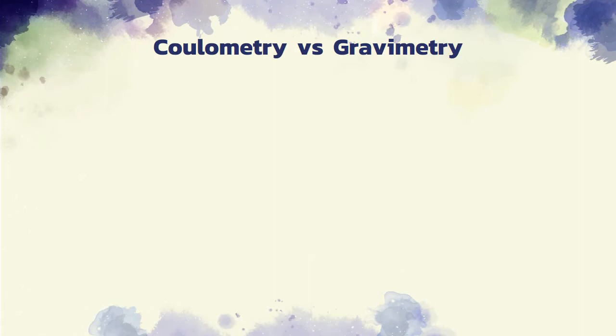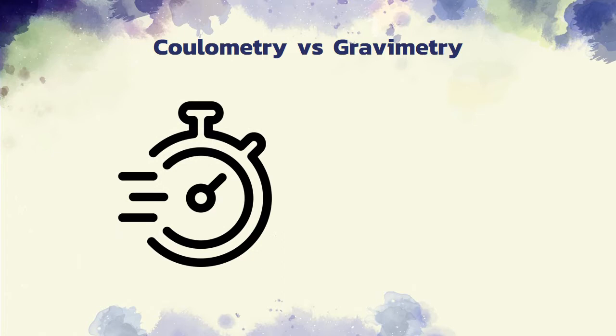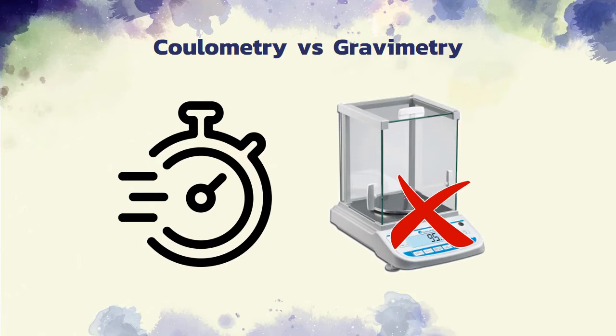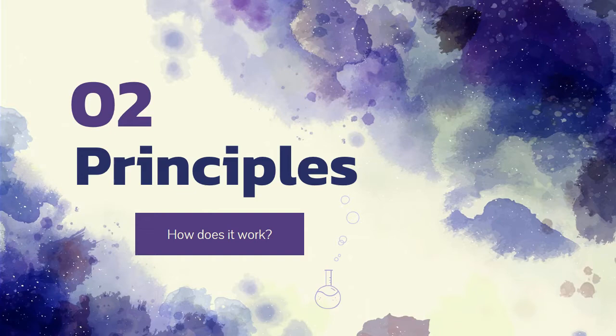In contrast to gravimetric methods, coulometric procedures are usually rapid and do not require that the product of the electrochemical reaction be a weighable solid. Now, let's dig deeper into the working principles behind coulometry.